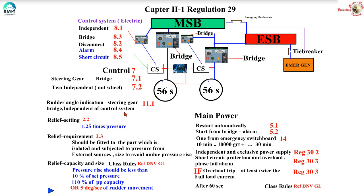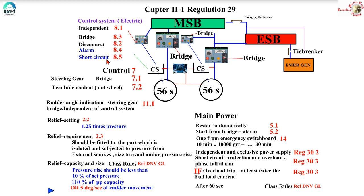The rudder angle transmitter is only for indication and should not be the source also feeding the control system. If the control system is electric, additional rules apply: it should be independent, operable from the bridge, and you should be able to disconnect it from the steering gear. That is why on ships you have the option of cutting power to the bridge control system from the steering flat during emergency steering. You should also have an alarm if the control system fails, and short circuit protection for the control system — not an overload trip. This is the source of the common confusion: people misinterpret the control system rule and apply it to the main power circuit.